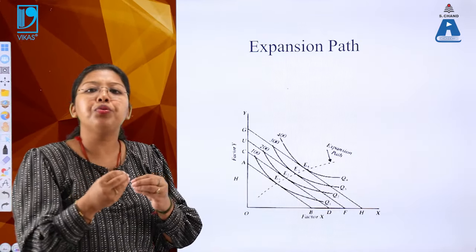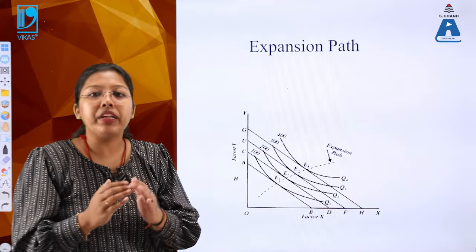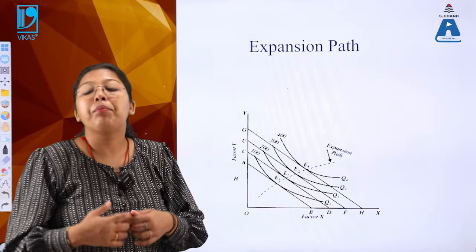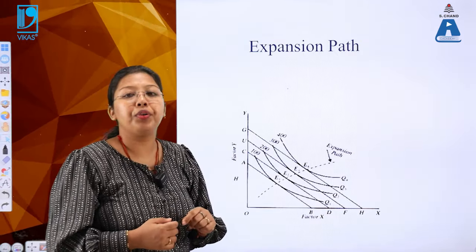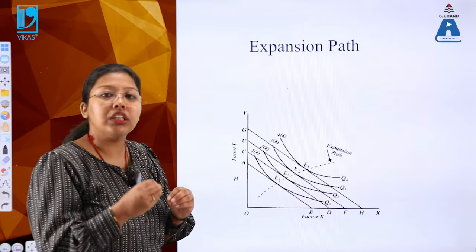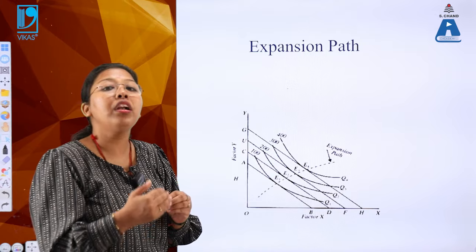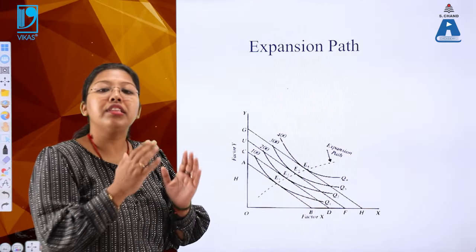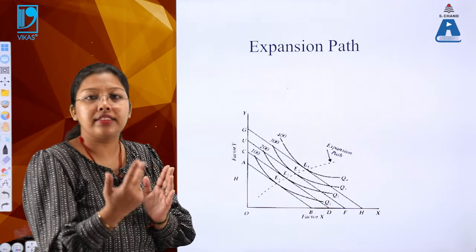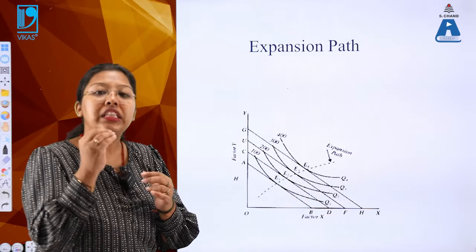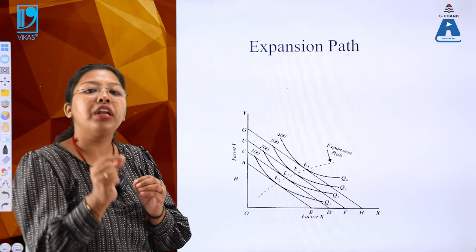The isocost curve shows exactly what the budget of the producer is - the budget with which they are producing. If I have a budget and I'm using two factors, I'll produce a certain amount. If the budget is exceeded, production won't happen; within the budget, I produce the maximum. The producer balances isoquants against their isocost budget line.